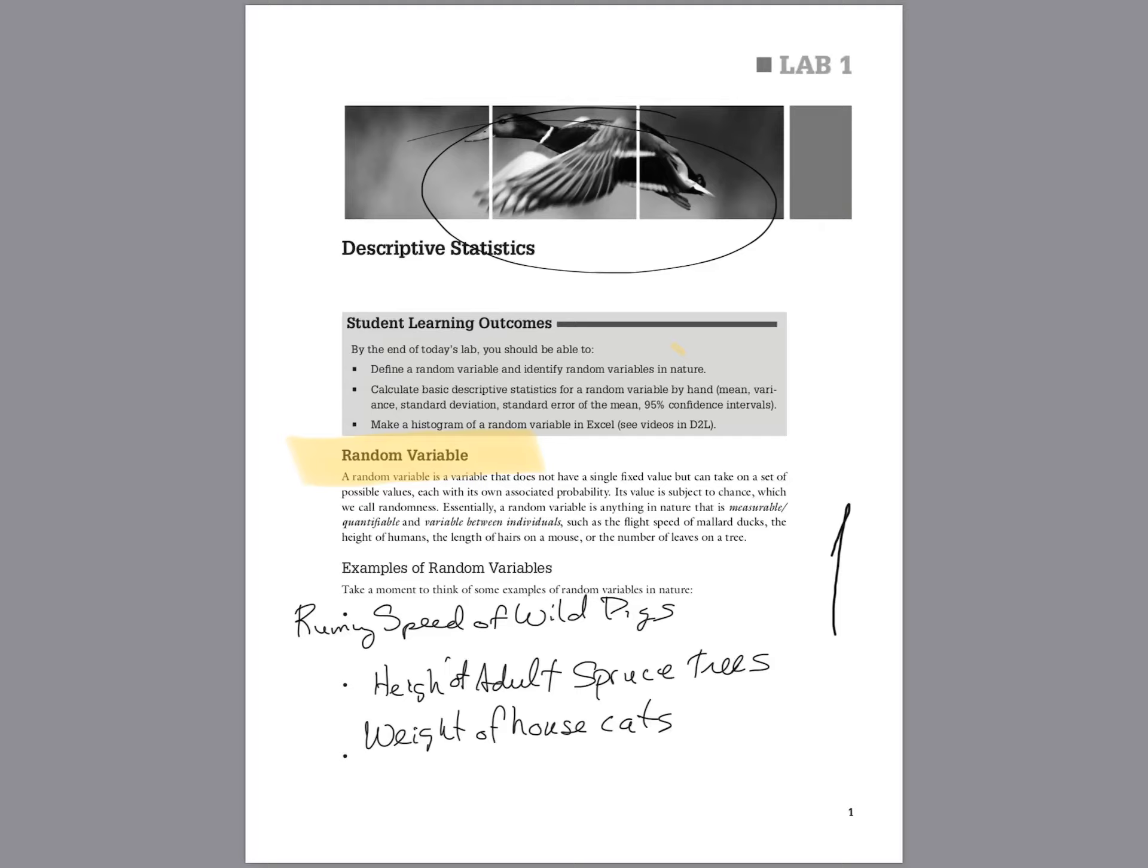These are, it's a variable that does not have a single fixed value, but can take on a set of possible values, each with its own associated probability. That's a good phrase to memorize. You should memorize it. That's how you explain what it is.